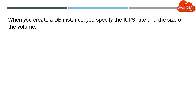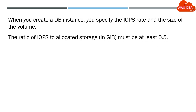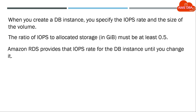When you create a DB instance, you specify the IOPS rate and the size of the volume. The ratio of IOPS to allocated storage must be at least 0.5. Amazon RDS provides that IOPS rate for the DB instance until you change it.